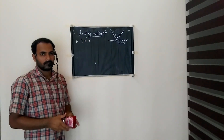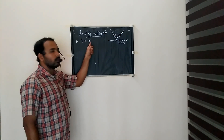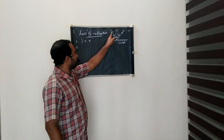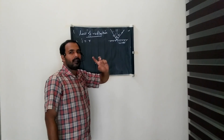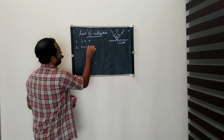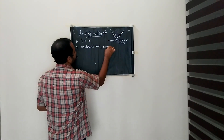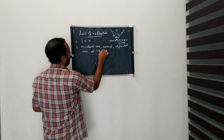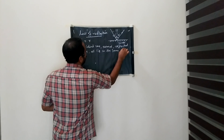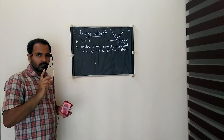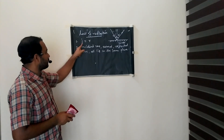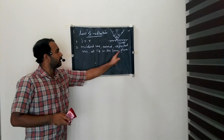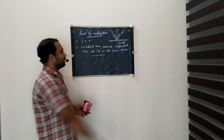The first law of reflection states that the angle of incidence is always equal to the angle of reflection. The second law of reflection states that the incident ray, normal, and reflected ray all lie in the same plane.